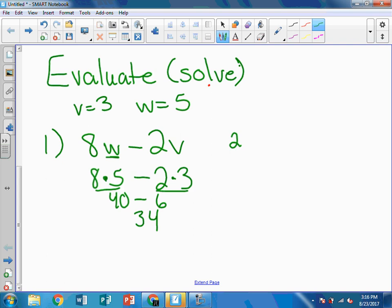Alright, number 2. I'm going to take 3W squared. Alright, so I'm going to evaluate that expression. So I have to put 5 in for W. So I'm going to rewrite this. 3 times 5 squared.